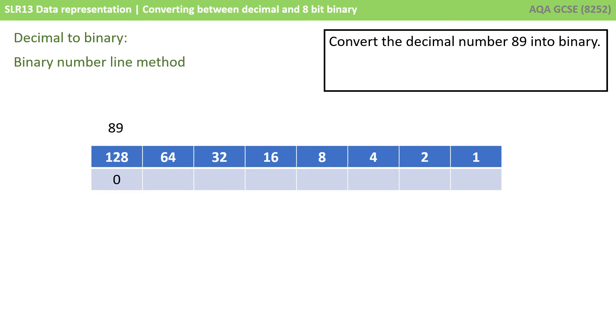So we start with the leftmost column, what we call the most significant column. And we ask ourselves the question, how many 128s fit into 89? Well, the answer is 0, 128 doesn't fit into 89 at all, 89 is too small. So we take the whole value 89 and we move over to the next column.